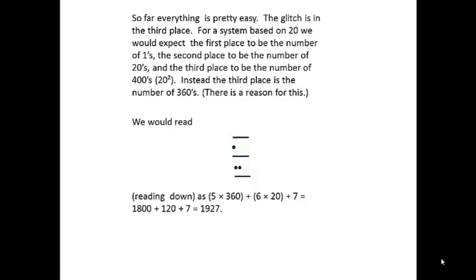So if we have this three place number, five in the third place, six in the second place, and seven in the first place, that would be five times 360 plus six times 20 plus 7. So five times 360 is 1,800, six times 20 is 120, and add them all together and we get 1927.